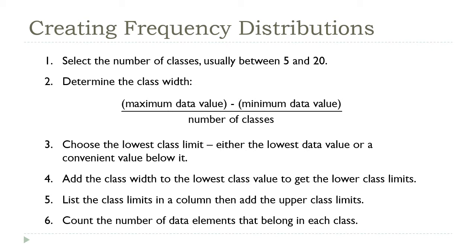So then to get the lower limits of the other classes, just add that class width to your first limit over and over again. And then to get the upper class limits, if you're dealing with integer data, you can just subtract 1 from the next class's lower limit. And if you're dealing with decimal data, you can subtract 0.1, 0.01, or some other small number.